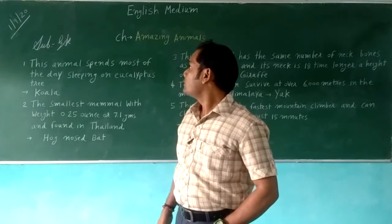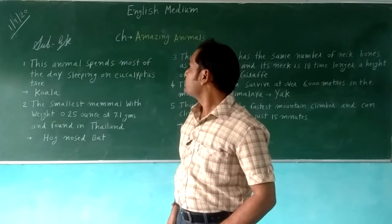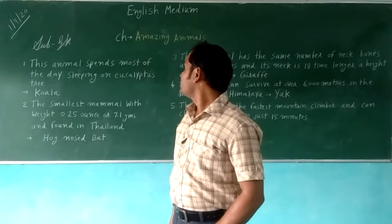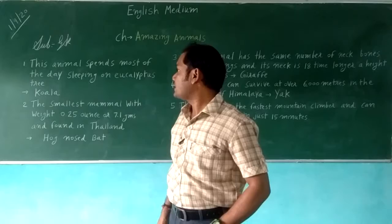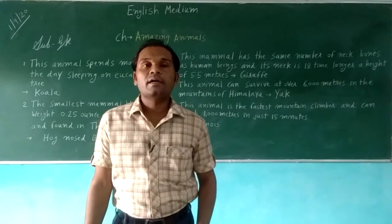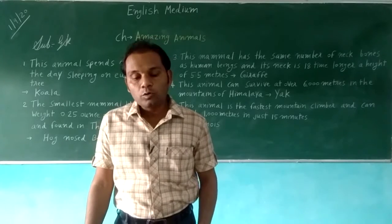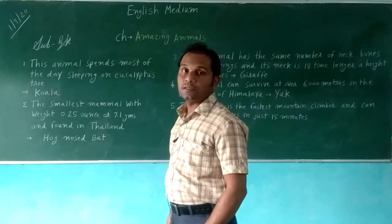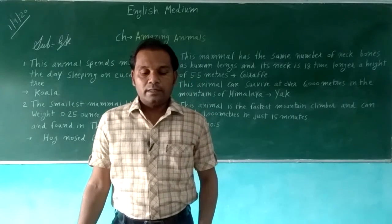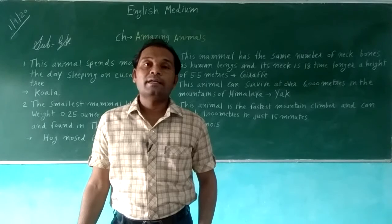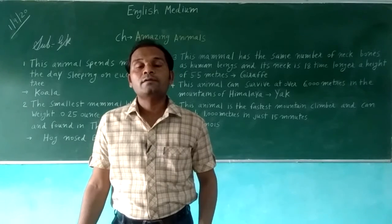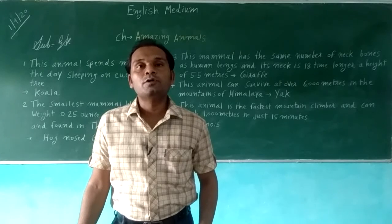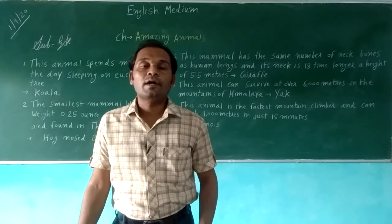First, this mammal spends most of the day sleeping on a eucalyptus tree — about 22 hours sleeping on the tree. It has sharp, close, and nimble feet that help it hold the branch of the tree while it is sleeping.